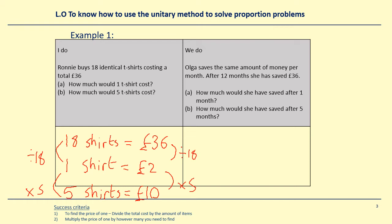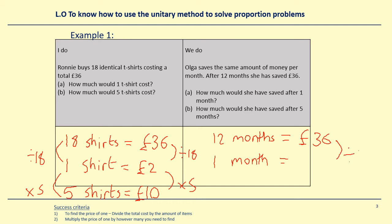Hopefully you've paused that video and worked through the idea. Now for the 'we do' — it says Olga saves the same amount of money per month; after 12 months she has saved £36. So 12 months = £36. We want to find out how much she saves after one month, so divide the price by the quantity. One month is one twelfth of the time, so she will have saved one twelfth of the money — divide the price by 12, which equals £3.